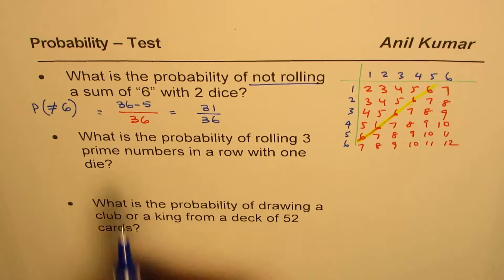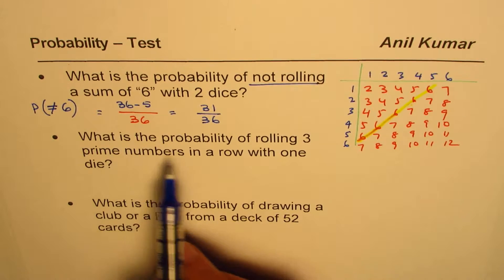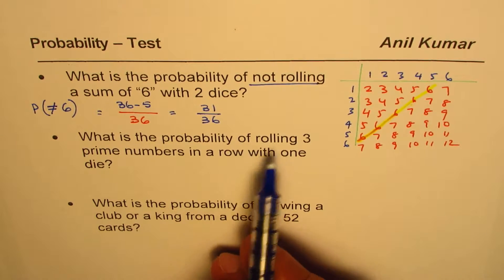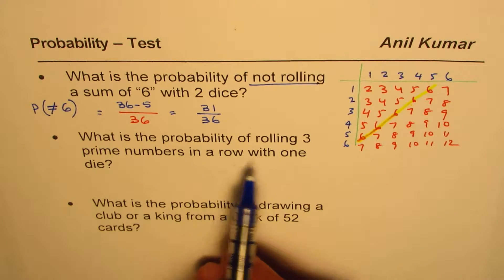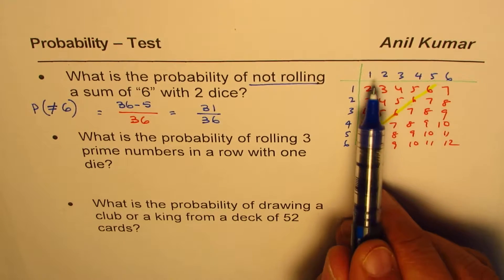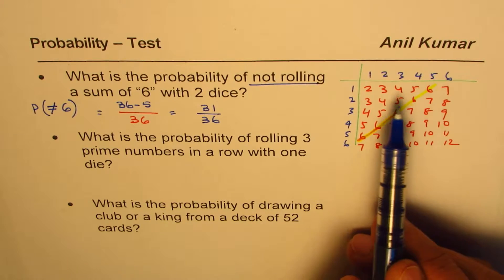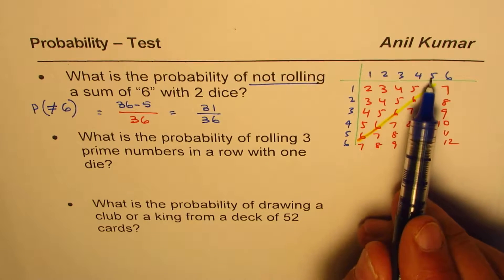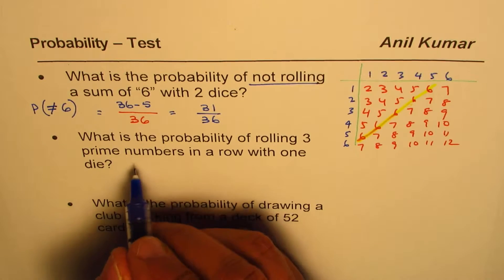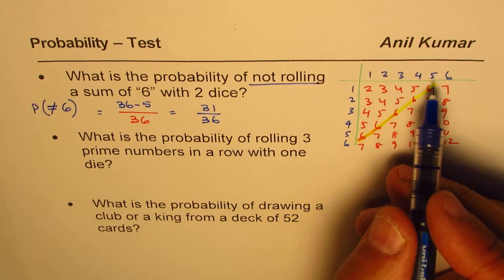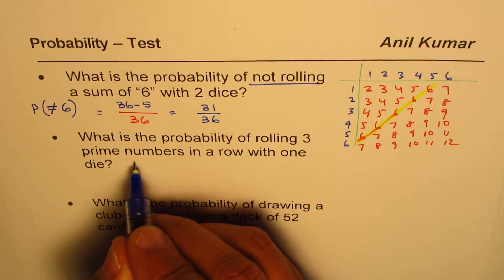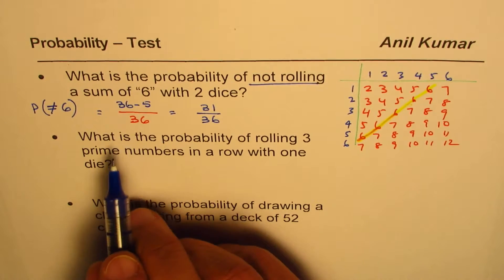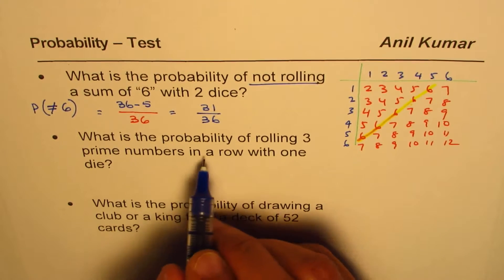Now the next one is: what is the probability of rolling three prime numbers in a row with one die? So you can roll 1, 2, 3, 4, 5, or 6. Now prime numbers here are 1, 3, and 5. So the probability of 1 prime number is 3 out of 6, or half.